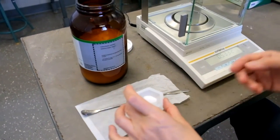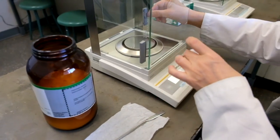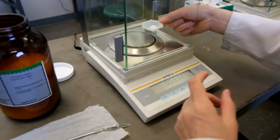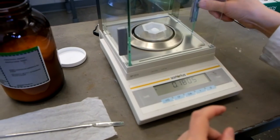Bring the weigh boat inside the balance chamber, close the balance door and read the mass. The mass is 0.1806 grams.